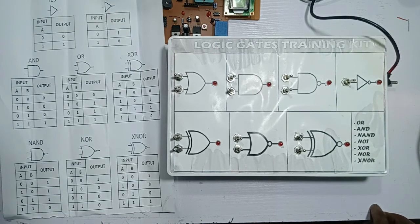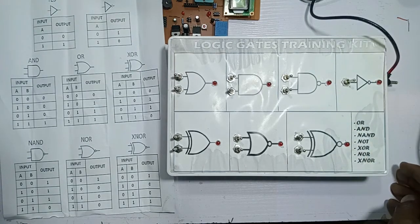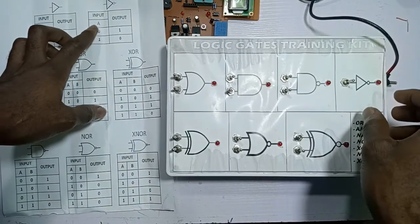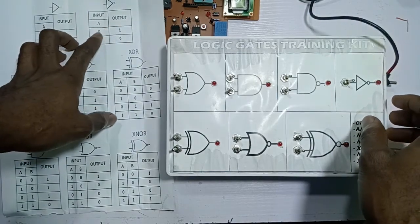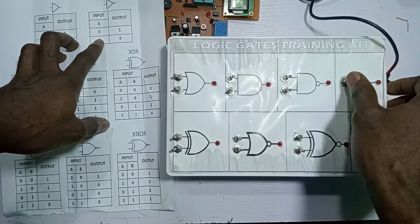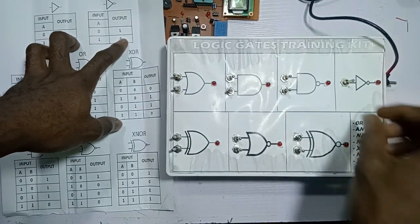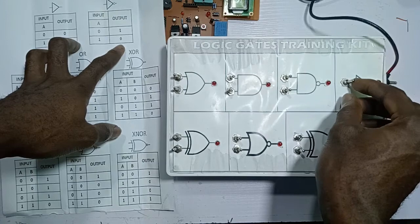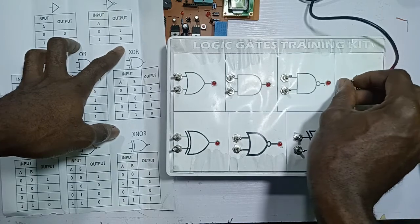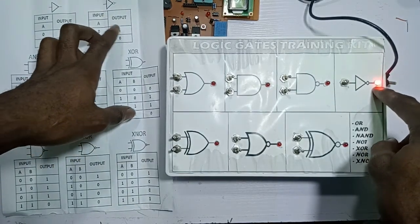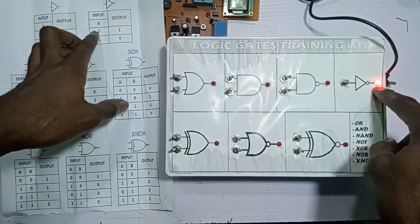The device is on. Starting with the NOT gate — as you can see on the table, it's already one because the switch is this way, so the output is zero. If I move it to zero, as you can see, the output is one when the input is zero.